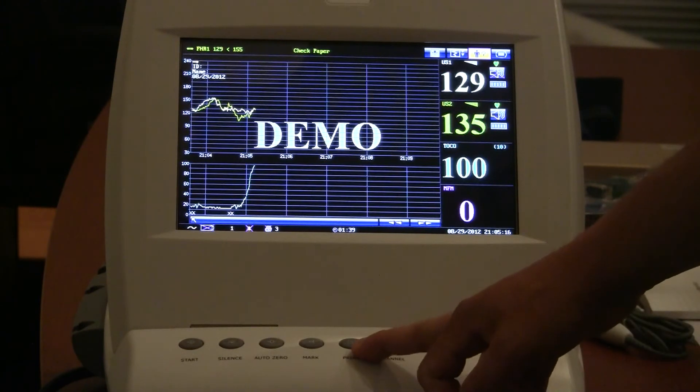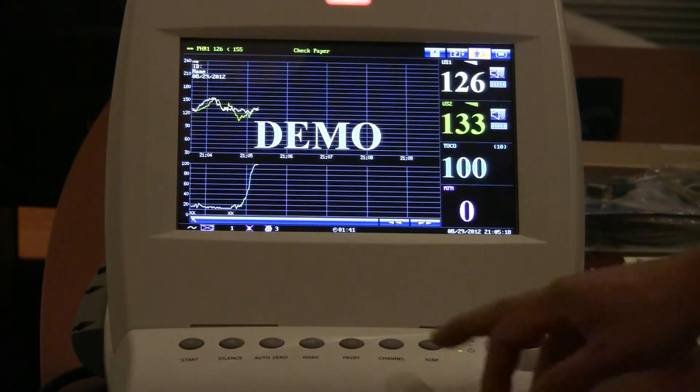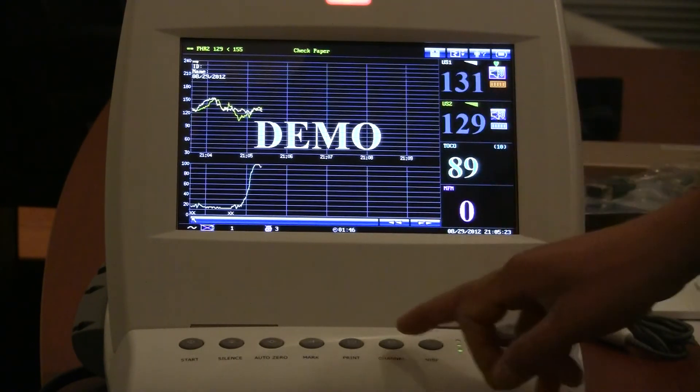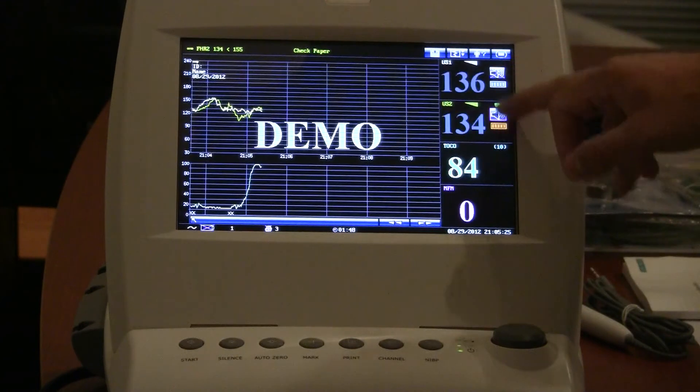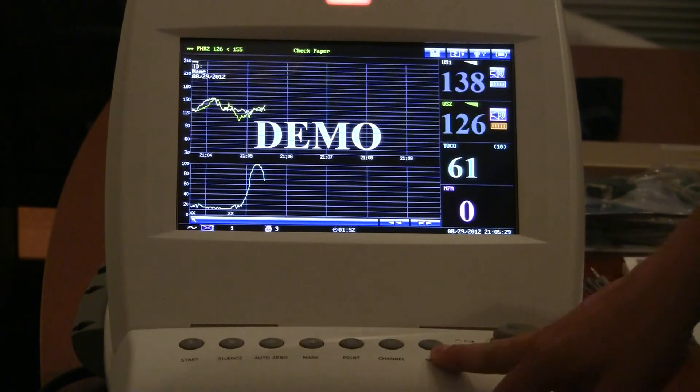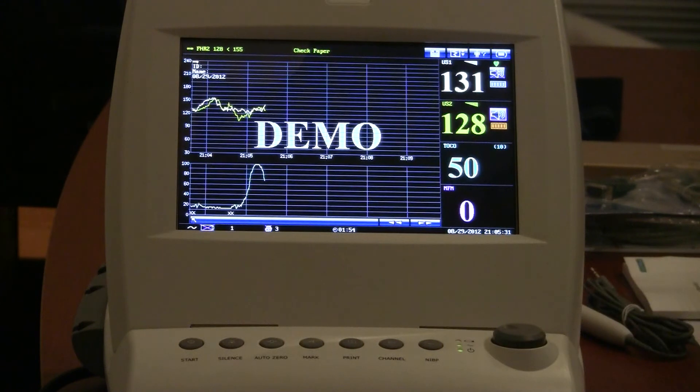Here's your print button to start and stop your printing. Channel is going to switch the channels between the fetal heart rates here and here, your audio alarms, and NIBP, which actually doesn't apply to this monitor. That would be used for the F6 Express version, which has the maternal parameters that we mentioned.